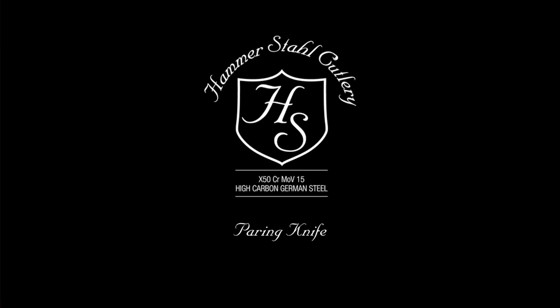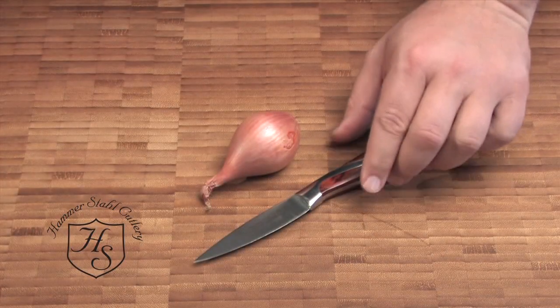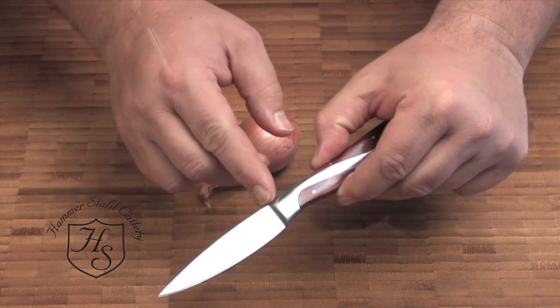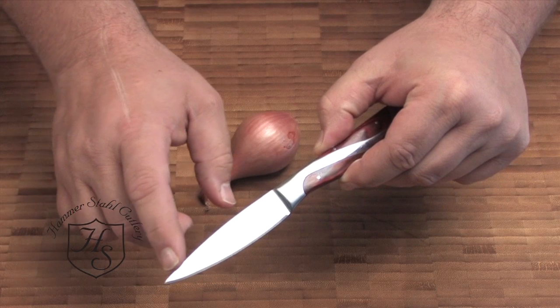Today I'd like to share with you the many uses of the 3 1⁄2 inch paring knife. You'll notice that the 3 1⁄2 inch paring knife is 3 1⁄2 inches from the bolster to the tip.